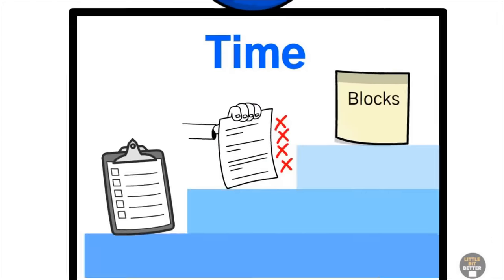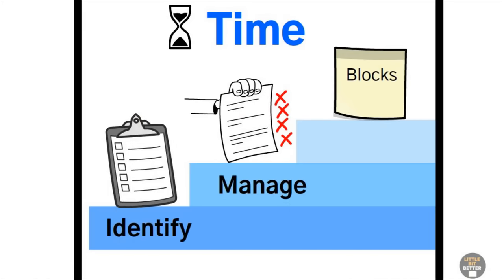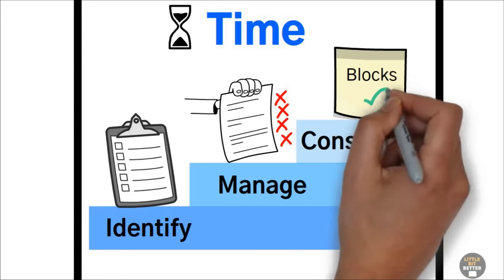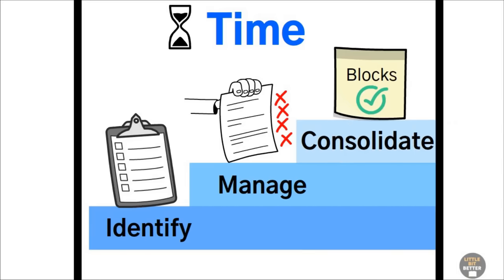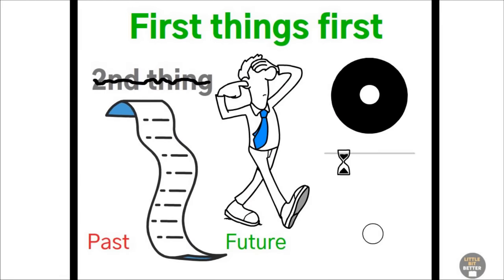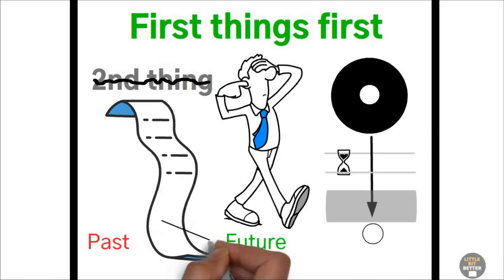Number two, first, track your time regularly so that you can identify the time wasters. Second, eliminate the time wasters and delegate as much as you can. Third, consolidate and create large time blocks for tasks that really matter. Number three, first things first. Ignore the second thing. Concentrate on the first thing and get it done well. Go slow and have a margin of safety. Regularly clean your to-do list to make space for new tasks and opportunities. Choose the future, not the past.